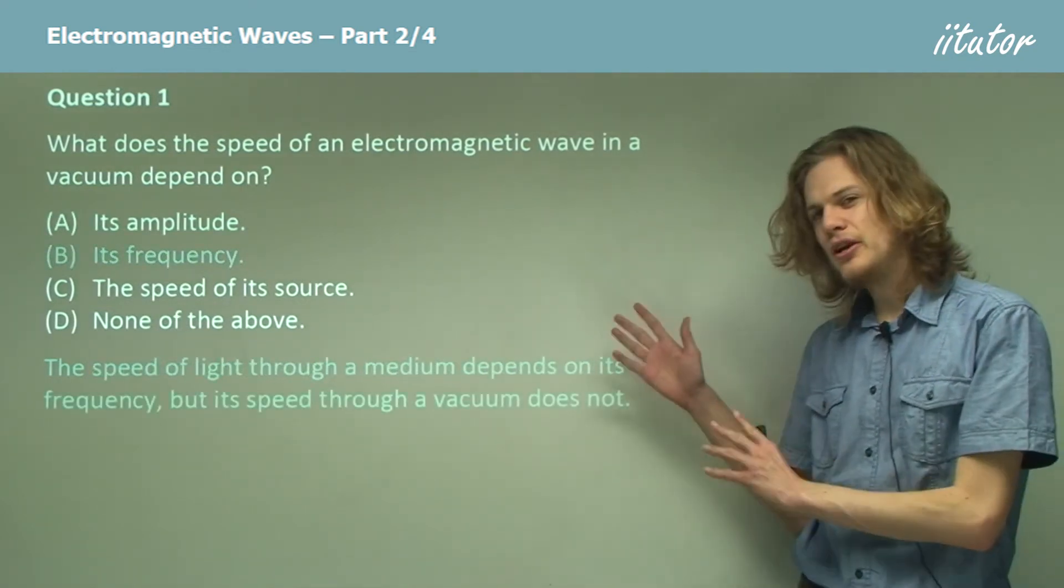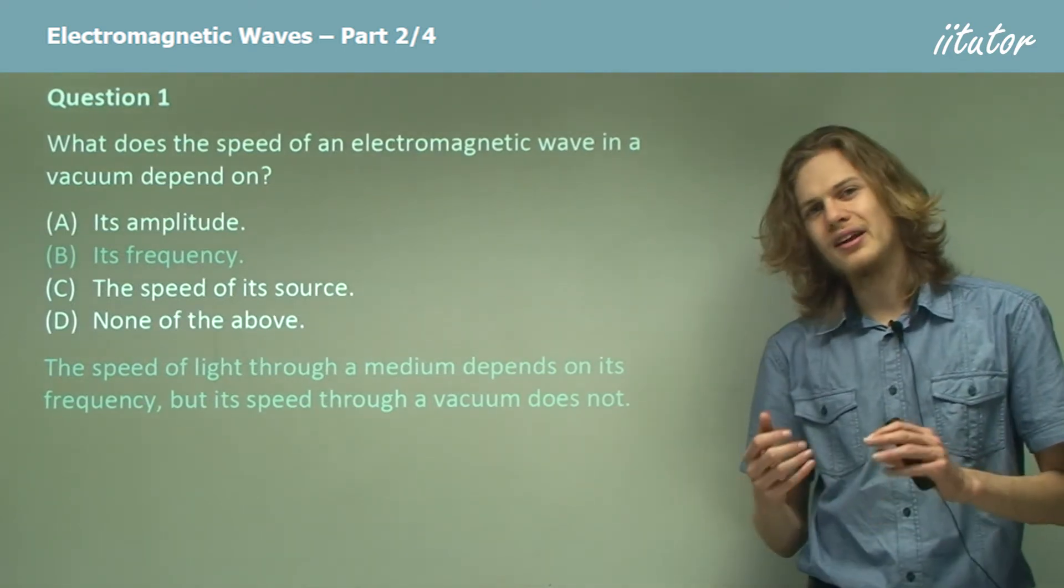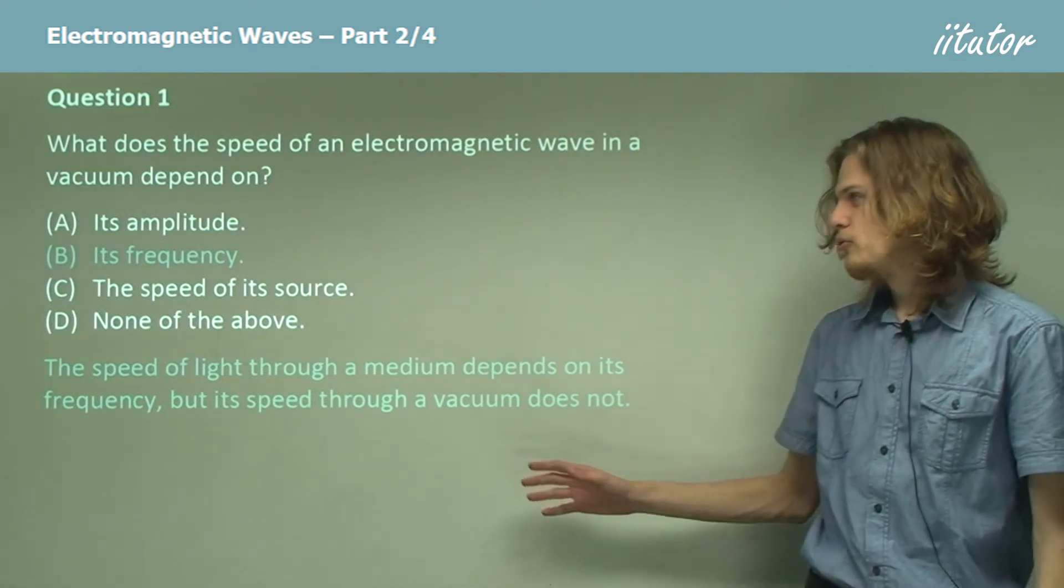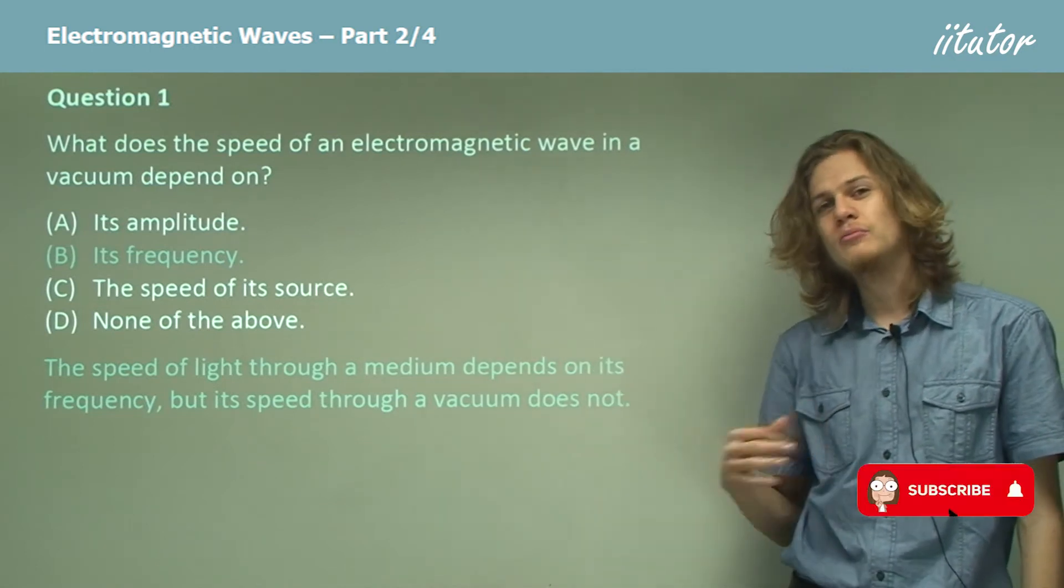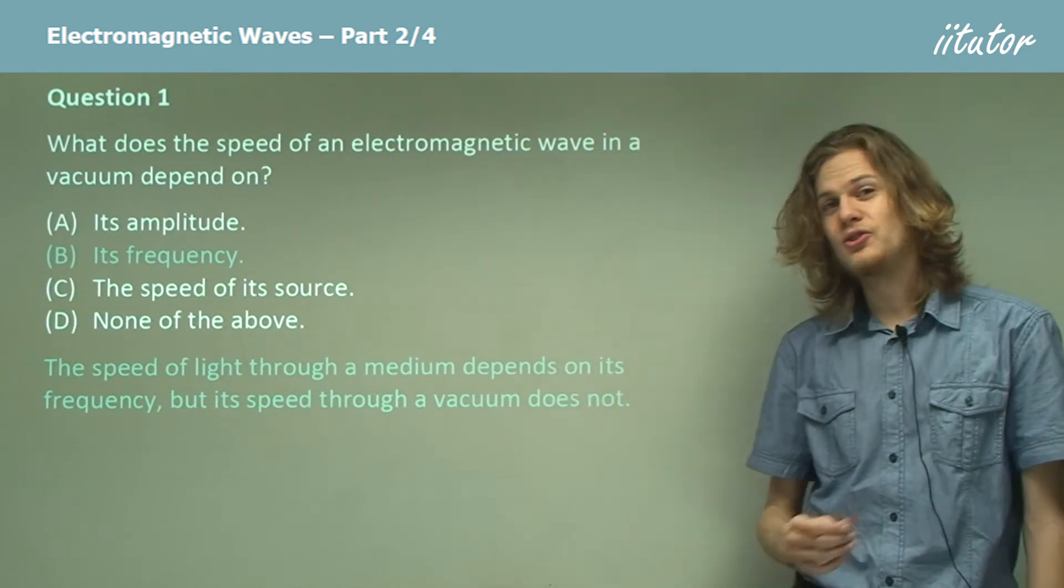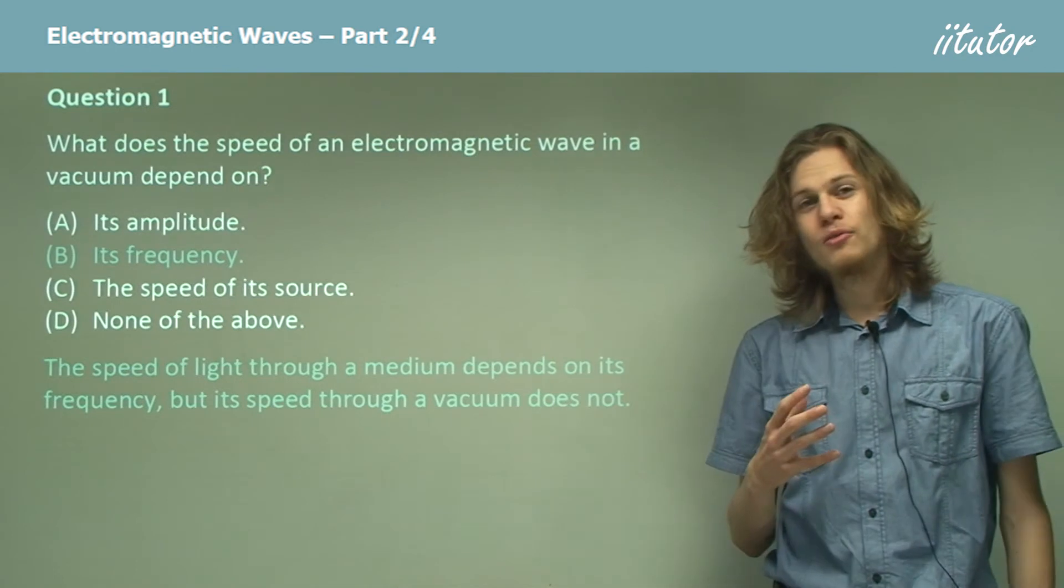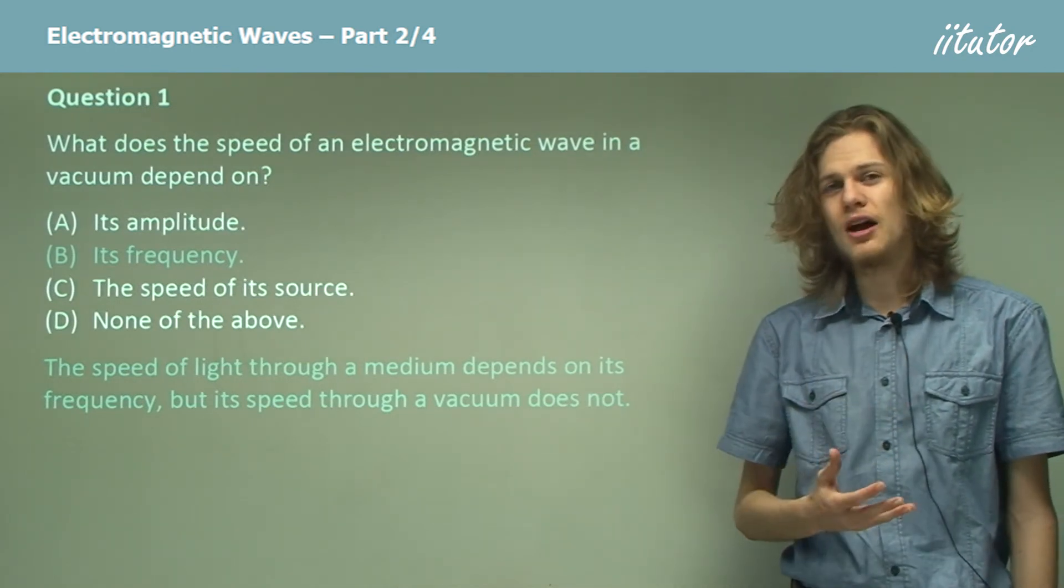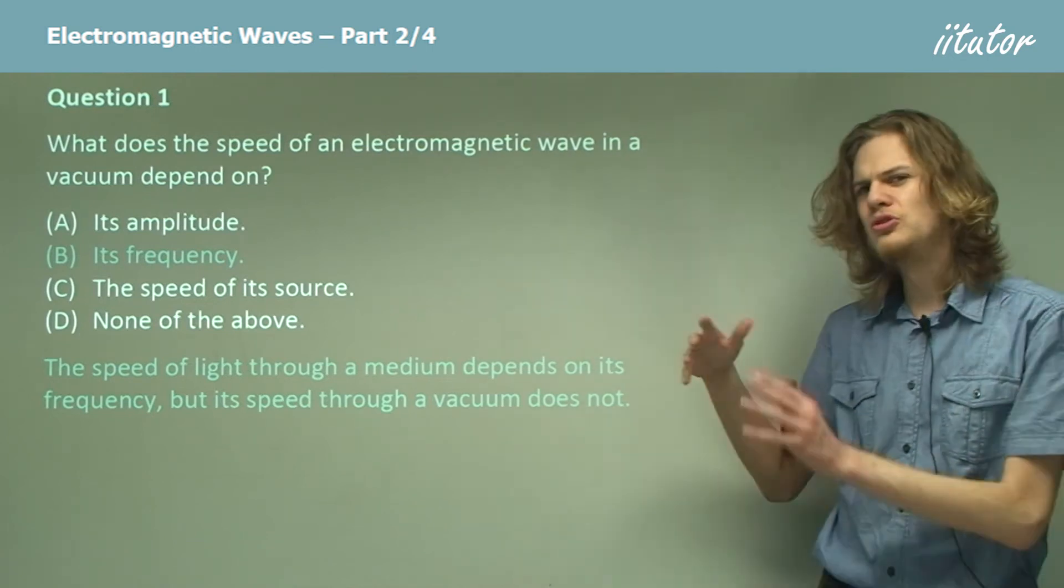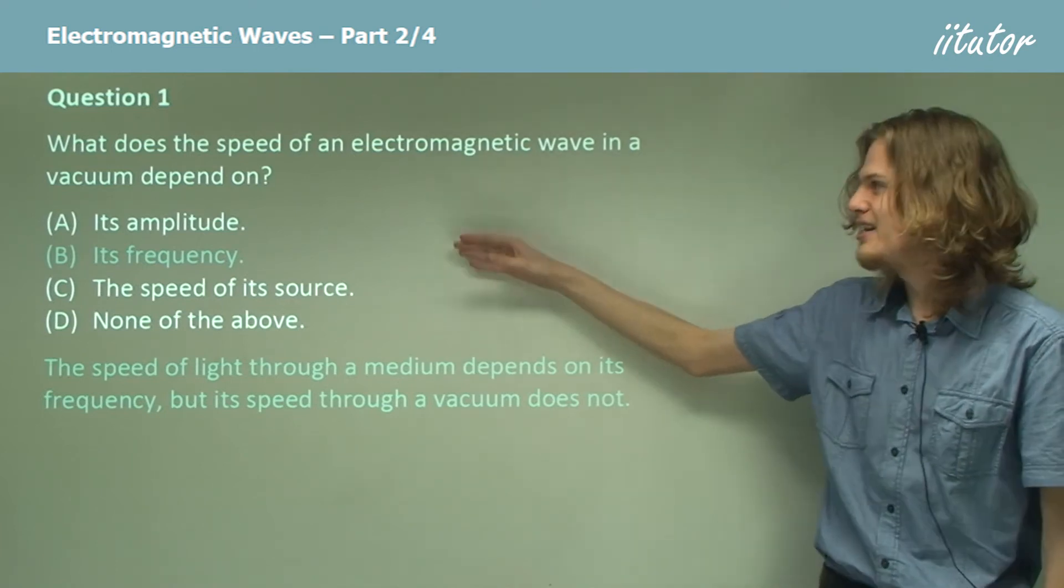B says its frequency, but for the same reason as for sound waves, we know that this won't change light waves' speed. Remember that the frequency of a sound wave determines its pitch, how high up it is. The frequency of light, in fact, determines its colour, but we'll get to more on that later. The point is, different colours of light and different pitches of sound all travel at the same speed. So this won't affect the speed of light in a vacuum.